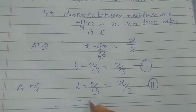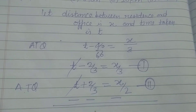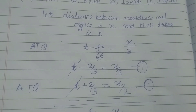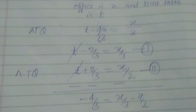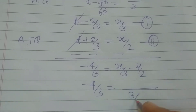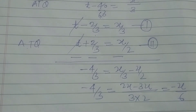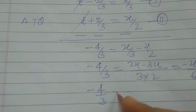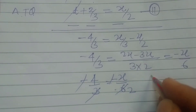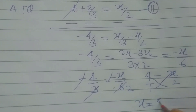Now we subtract the two equations. The t terms cancel out, giving us: -40/60 - 40/60 = x/3 - x/2, which simplifies to -80/60 = (2x - 3x)/6, so -4/3 = -x/6. Therefore, we get 4 = x/2, and on cross multiplication we get x equal to 8 km.